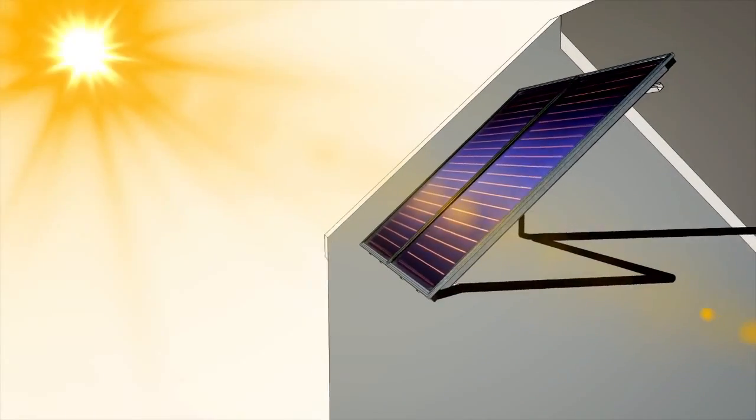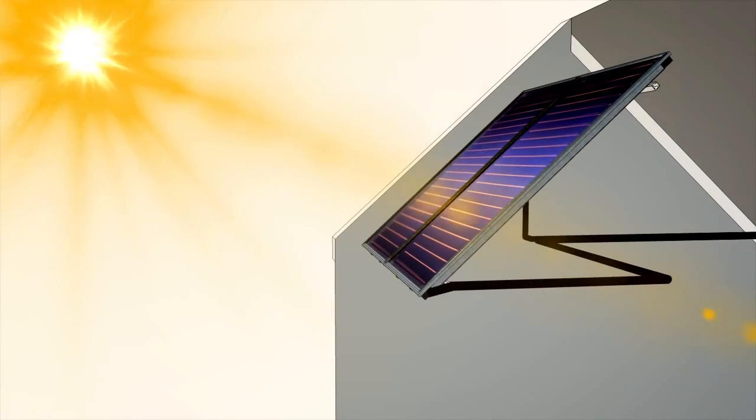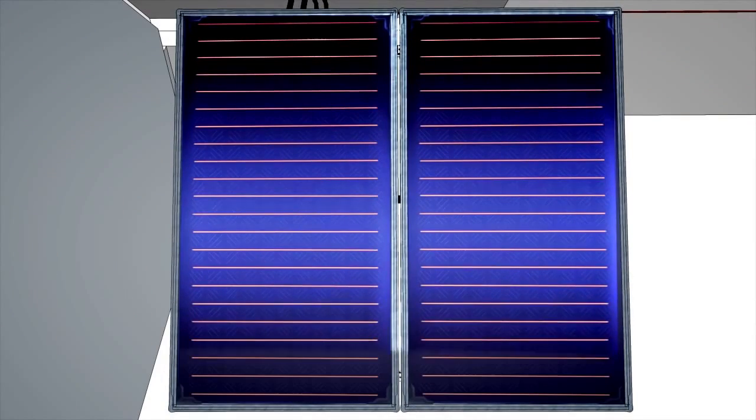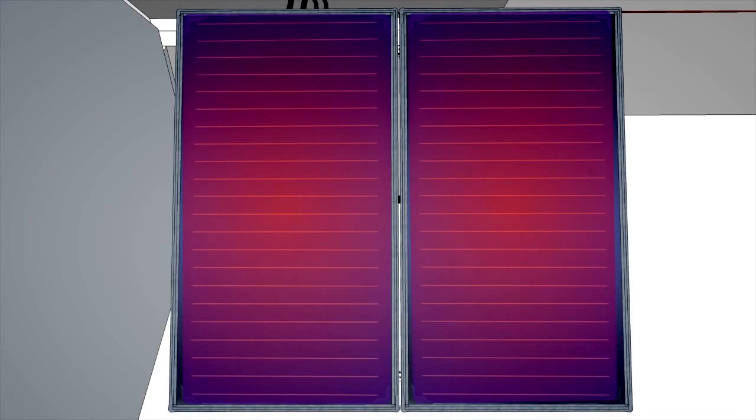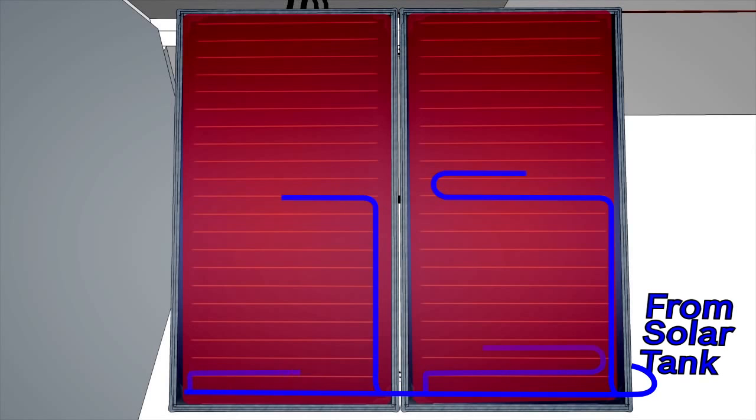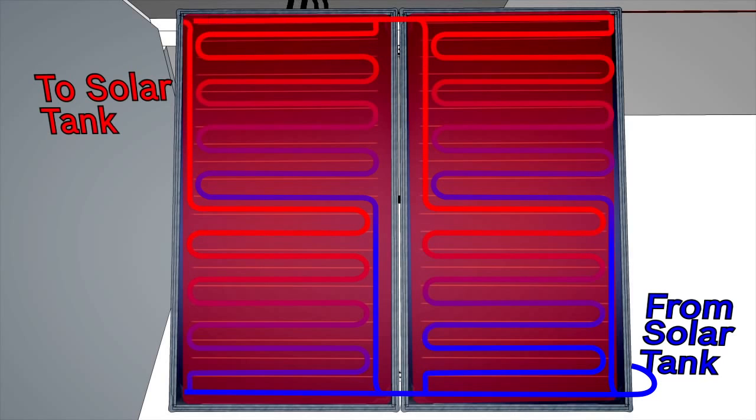The energy from the sun transfers through the glass of the collector and is absorbed by a component called an absorber plate. The absorber plate has a special coating that is designed to capture as much solar energy as possible and converts this energy into heat. The heat is then transferred to a fluid passing through multiple small pipes attached to this absorber plate.